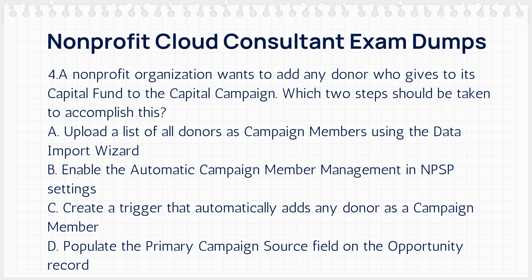A. Upload a list of all donors as campaign members using the data import wizard. B. Enable the automatic campaign member management in NPSP settings. C. Create a trigger that automatically adds any donor as a campaign member. D. Populate the primary campaign source field on the opportunity record.